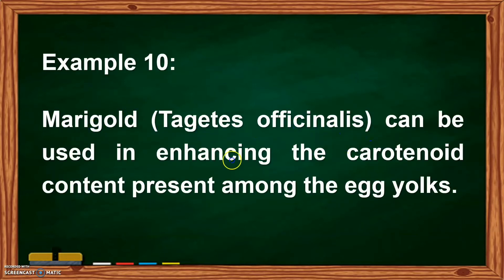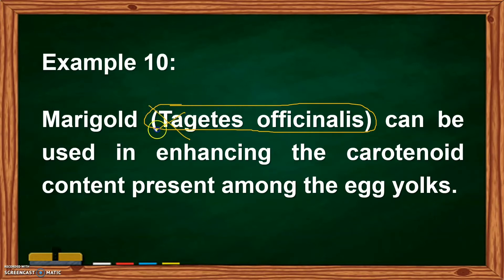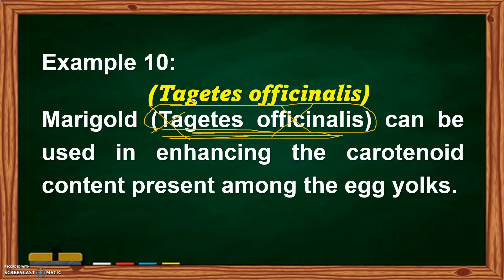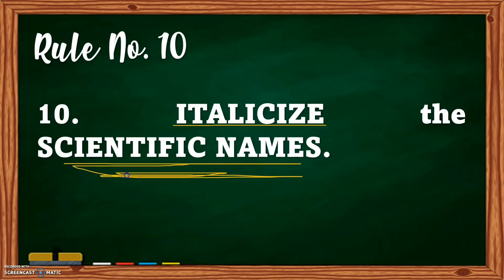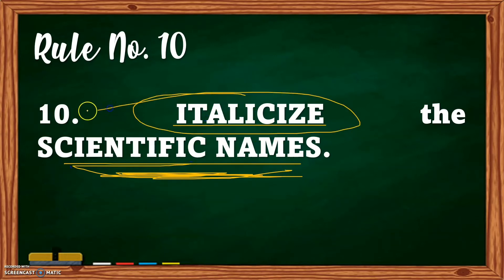Example number ten: 'Marigold taguetes officinalis can be used in enhancing the carotenoid content present among the egg yolks.' What is wrong? The scientific name 'Tagetes officinalis' — it should be italicized. Also, remember that for scientific names, the first letter of the genus should be capitalized and the rest should be in lowercase. Rule number ten: italicize scientific names. Whatever the scientific name, it must be italicized.